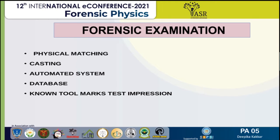For casting toolmarks, a number of casting materials are used. The methods include negative molding, low melting metal alloys such as Wood's metal, and silicone rubbers. The most common casting material used is Micro-Sil silicone casting medium. Next is the automatic system: nowadays a 3D automatic system is used where toolmarks are taken and computerized patterns are matched — the 3D system matches the toolmarks from the test sample against the suspected sample.